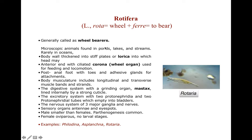The next phylum is Rotifera. Rota means wheel and fera means bearer, so they are known as wheel bearers. They are microscopic animals found in ponds, lakes, and streams, and are very rare in oceans. Here you can see the example of Rotaria. Their body wall is thickened into stiff plates or lorica. The anterior end has a ciliated corona — the wheel organ — used for feeding and locomotion.